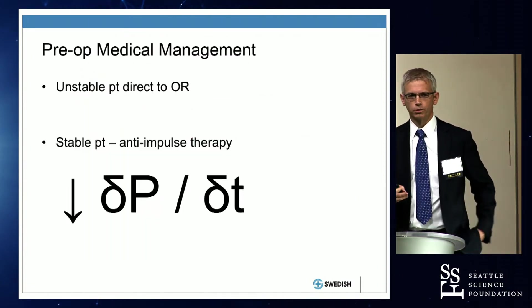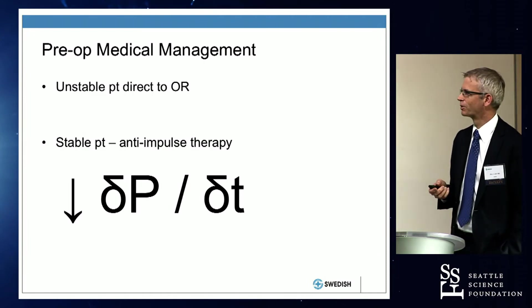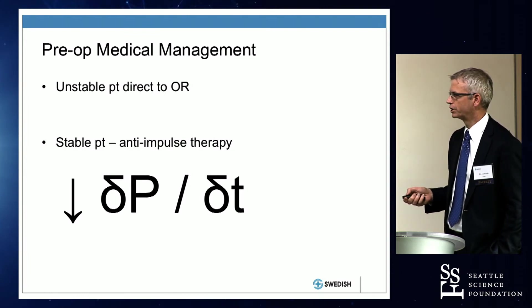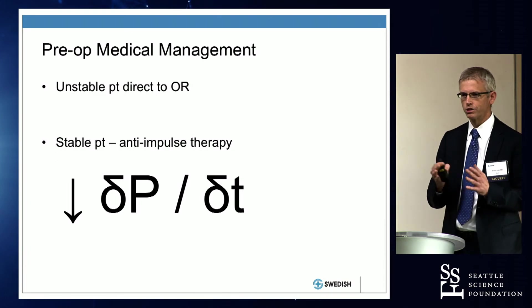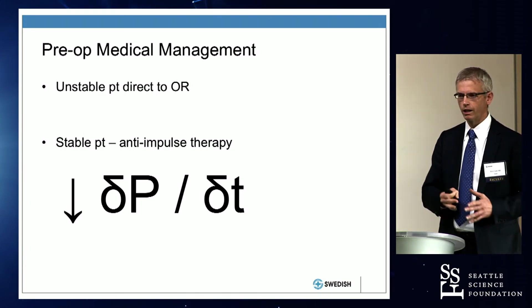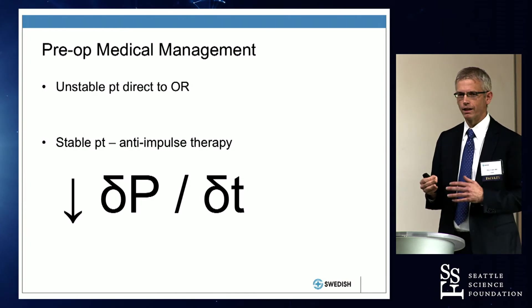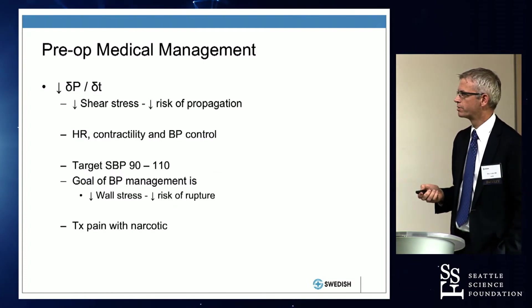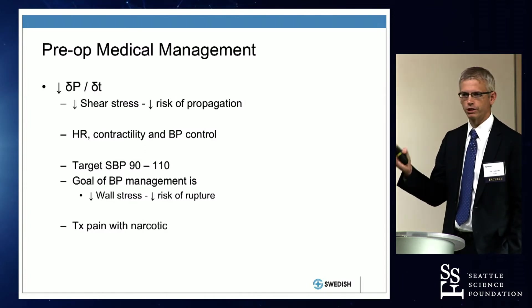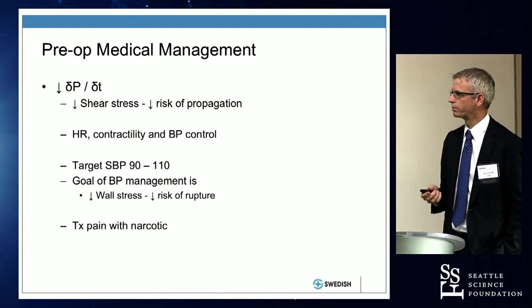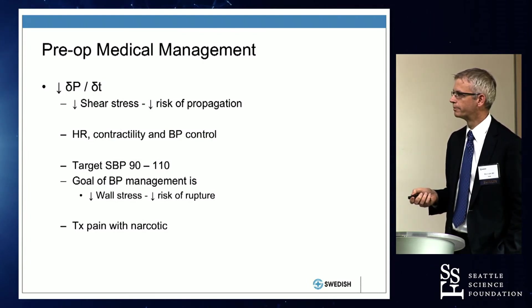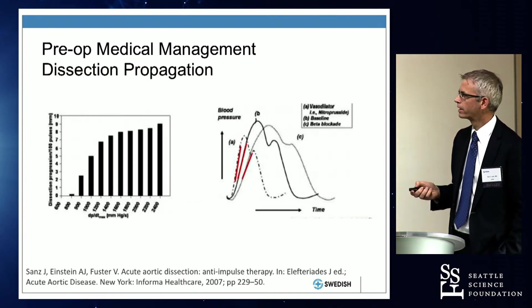How do we manage these patients before they get to the operating room? What's important is impulse — the change in pressure over the change in time (dP/dt). When the heart contracts, it generates pressure, the aortic valve opens, and blood is ejected with a huge amount of energy that can cause the dissection to propagate. The goal is to reduce the speed at which that pressure is generated, reducing shear stress and wall stress, and the risk of propagation. We do that through medical management.